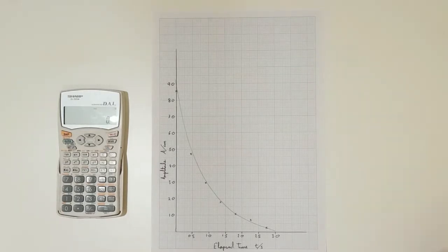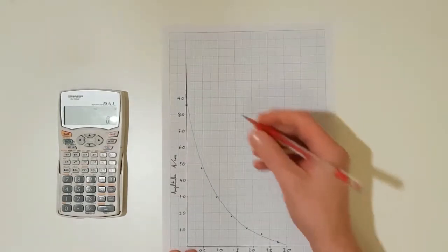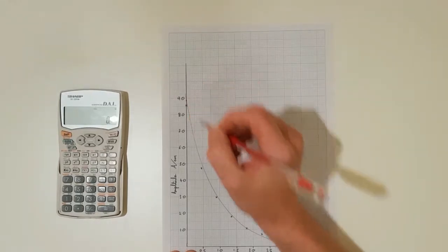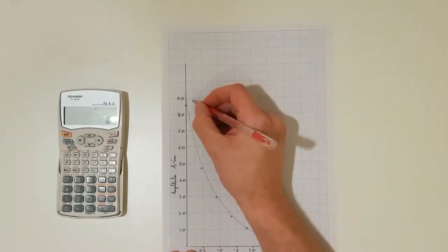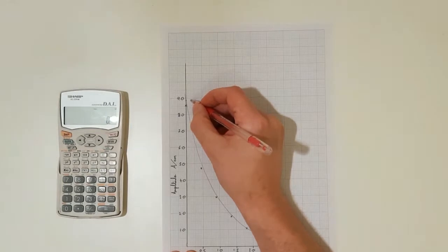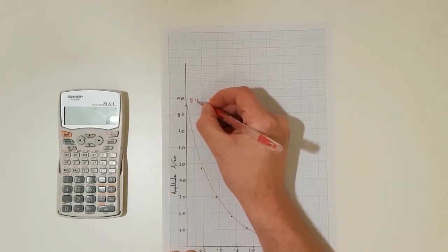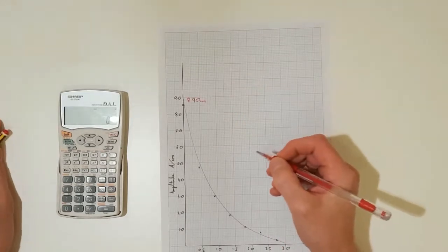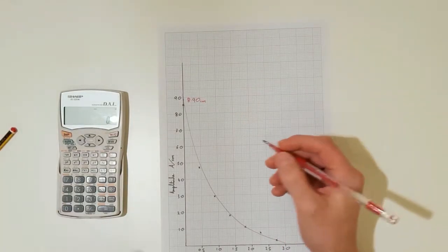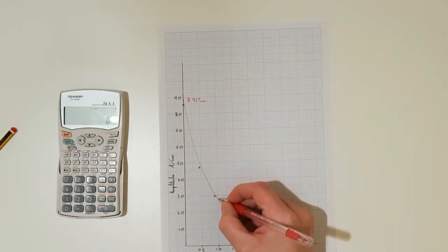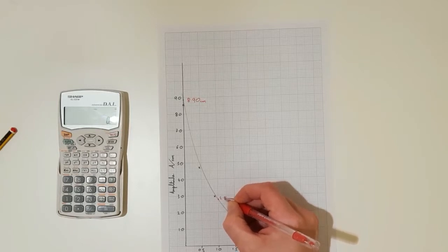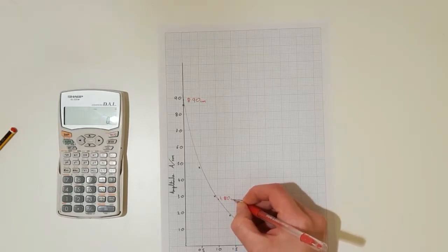The way we do this is we read off the amplitude at time zero, and we can see it takes on this value just under nine centimeters, and we will record that as 8.90 centimeters. And I am going to look at what the amplitude is one second later. So one second later you can see here the amplitude at this point is 2.80 centimeters.